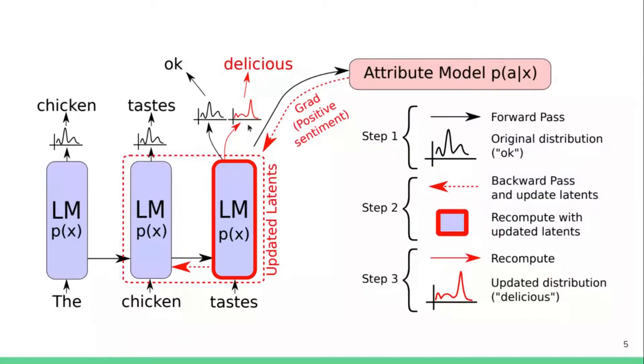We're recomputing the distribution to balance that towards 'delicious' using the information from the attribute model. And then once you recompute this, you are recalculating the most likely sequence. This is how it works at a high level. You can go into the paper for more details.